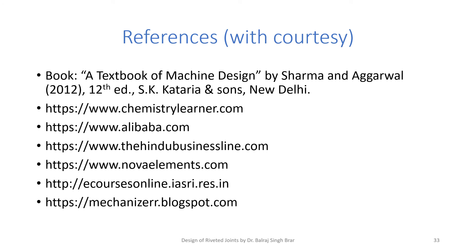This completes the lecture on different types of riveted joints. The main textbook referred to is 'A Textbook of Machine Design' by Shigley Agarwal, and some figures have been taken or modified from different websites for teaching purposes only. The presenter acknowledges the references here.